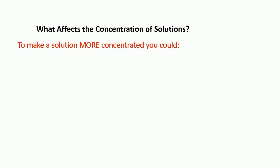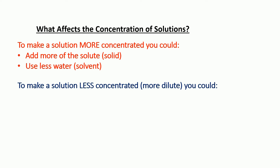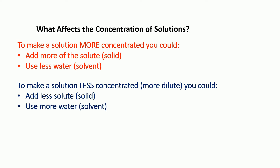If we think about what affects the concentration of solutions, we need to think about what we've seen in the practical. To make a solution more concentrated, we could either add more of the solute — the solid — or use less water, or whatever solvent you're using. To make a solution less concentrated, you could add less solute, or we could use more water — in other words, dilute it down.